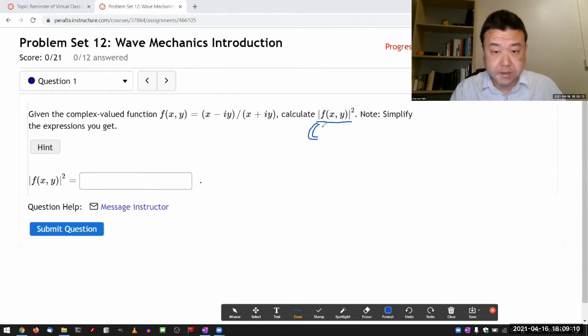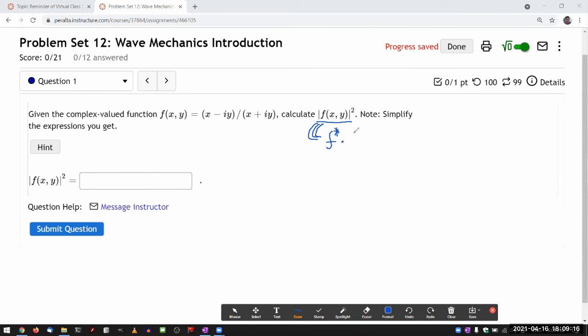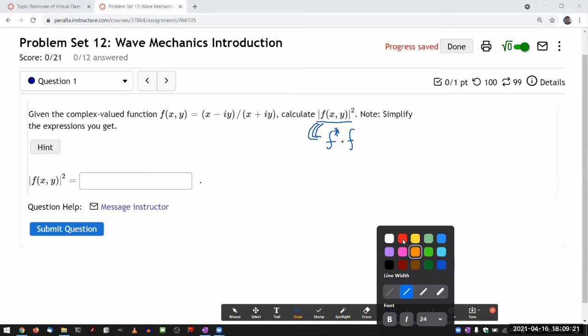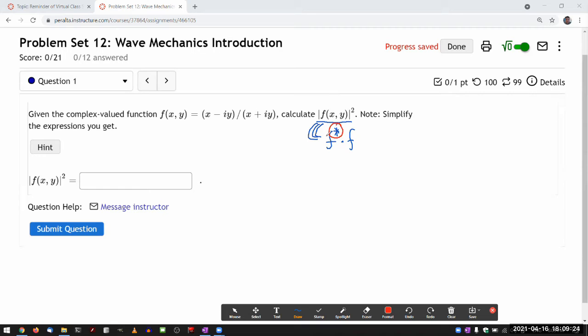And this, as a matter of notation, is defined as the complex conjugate times the function itself. And the complex conjugate here, what this conjugate operation signifies is wherever you see imaginary number i, you change it to minus i. And to the extent that the variables you have are real, you don't have to do anything to it. But if you have complex valued variables, then you have to make x go to x complex conjugate and have to deal with this operation later on.